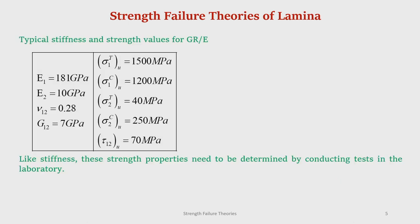Typically for graphite epoxy, we already have seen the Young's modulus along the longitudinal direction E1, transverse direction E2, nu_12 the in-plane Poisson's ratio, G12 the shear modulus, where 1 and 2 are the material directions. I am writing it every time so that you become accustomed to the fact that 1 and 2 represent the principal material direction — it has nothing to do with principal stresses.